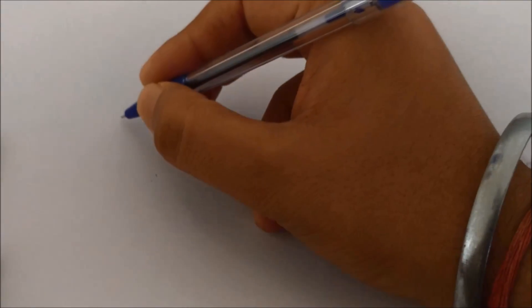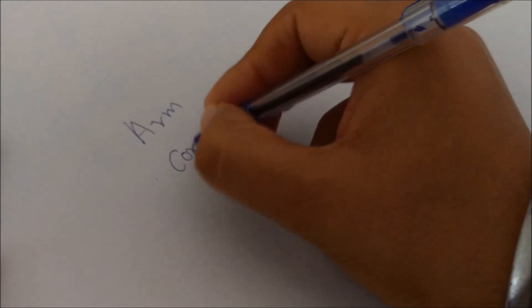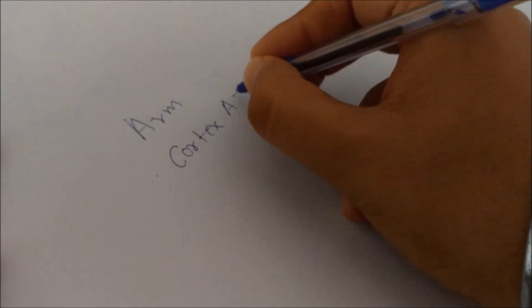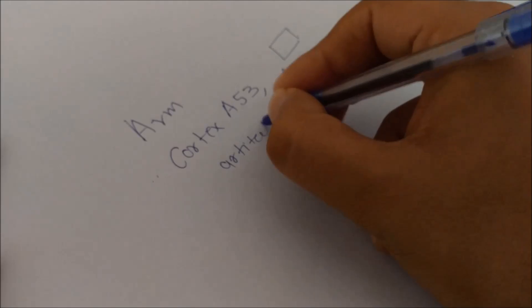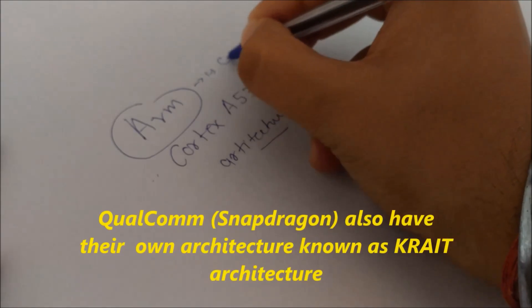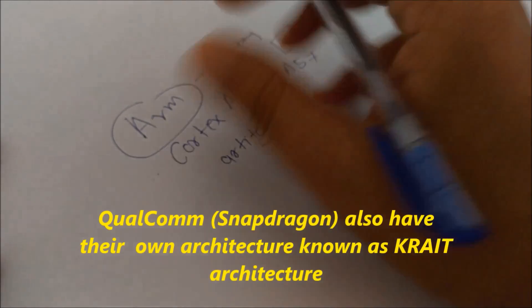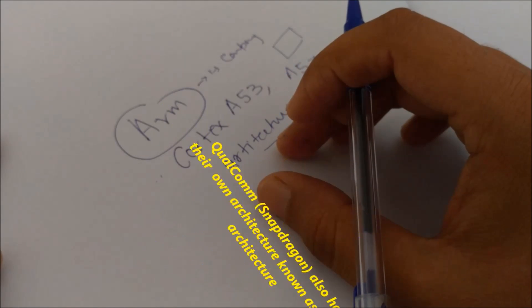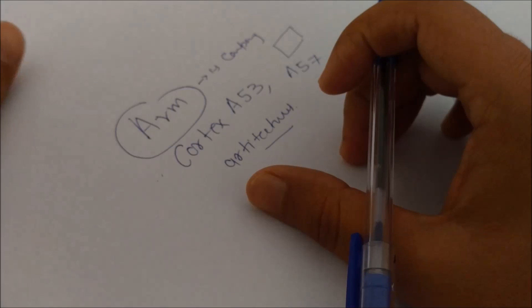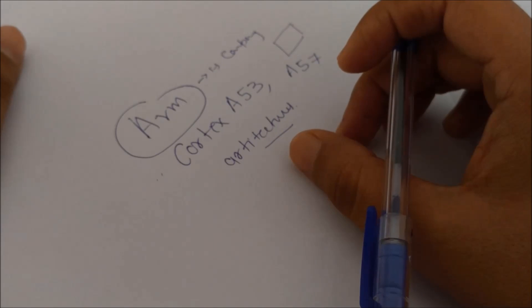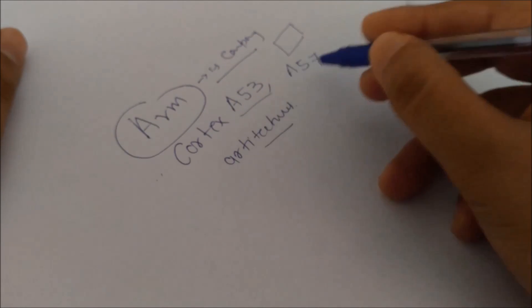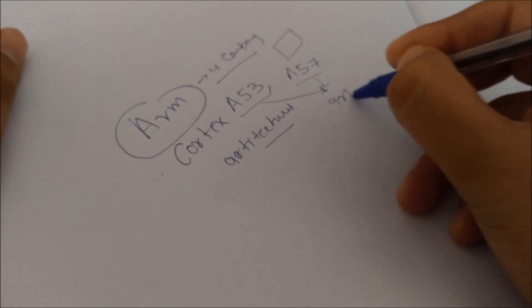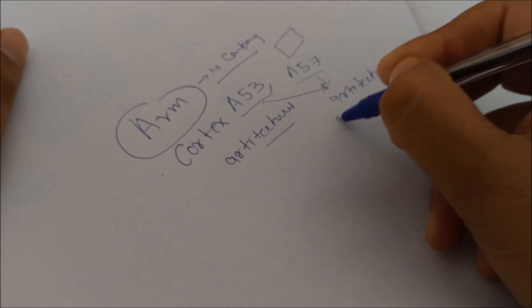So first of all we have this ARM Cortex A53, A57 architecture. So what does this mean? The ARM is a company which provides a set of instructions which is called architecture for the processors, and this is used by Snapdragon, Samsung and even Apple to make their processors. So ARM is a company and A53 and A57 is the architecture for mobile computing.